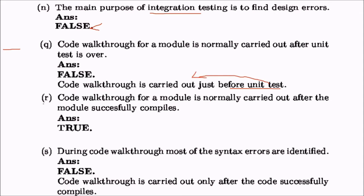Code walkthrough for a module is normally carried out after the module successfully compiles — this is true. During code walkthrough, most syntax errors are identified — this is false. Compilers and IDEs like Visual Studio can easily catch syntax errors, so code walkthrough is carried out only after the code successfully compiles and syntax errors are removed. Then only code walkthrough can begin, focusing on logical errors.